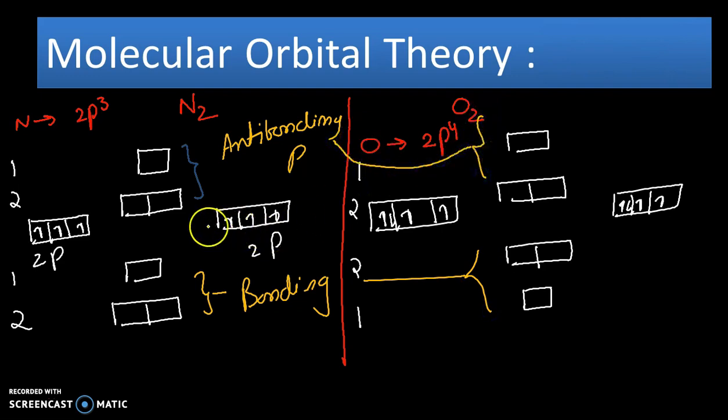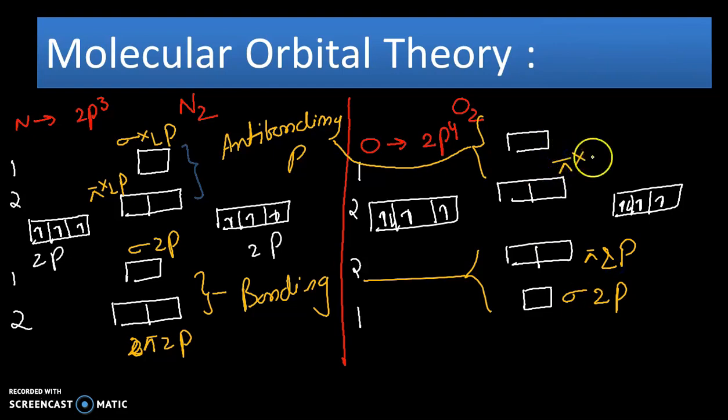In case of nitrogen, these are sigma 2p orbitals, pi 2p orbitals, pi anti-bonding 2p orbitals, sigma anti-bonding 2p orbitals. Here again, sigma 2p orbital, pi 2p orbitals, pi star 2p orbitals, and sigma star 2p orbitals. You have to remember the name of these orbitals.